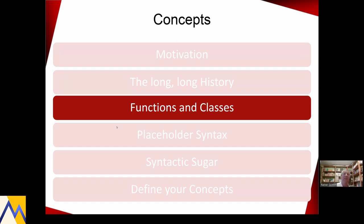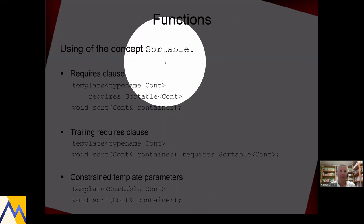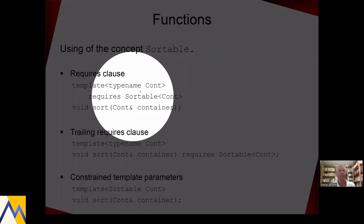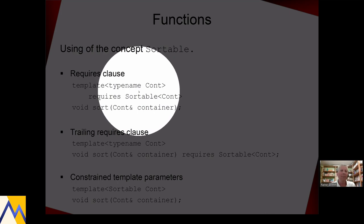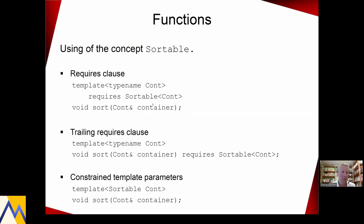Now we go to the more interesting stuff. Boring is, to say differently, a virtue in programming languages. Because if something is boring, you immediately understand it. Here is a concept — you see it — Sortable. And I just use it in three different ways. In the so-called requires clause, the type parameter cont has to support the concept Sortable. You also can use it in the so-called trailing requires clause: requires sortable cont. And the syntax I most prefer because of readability: just use it instead of typename or class — Sortable cont.